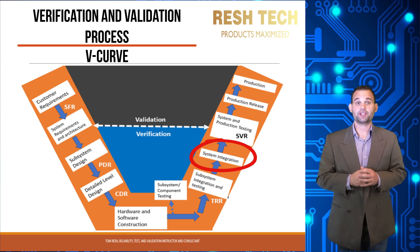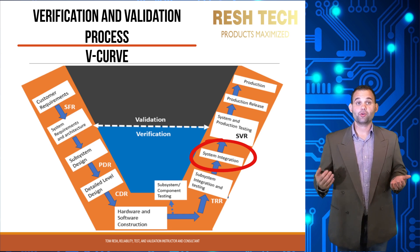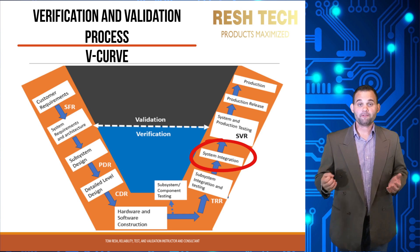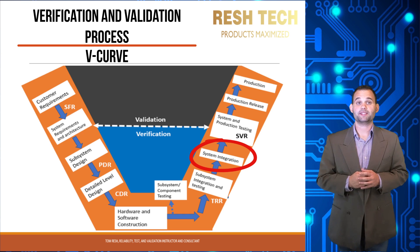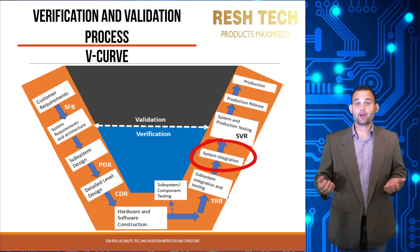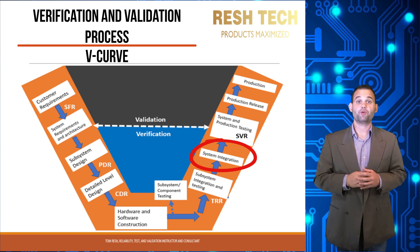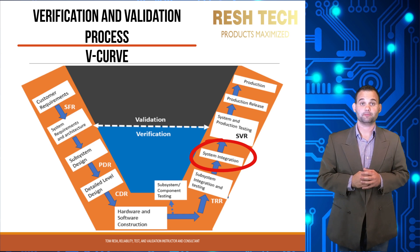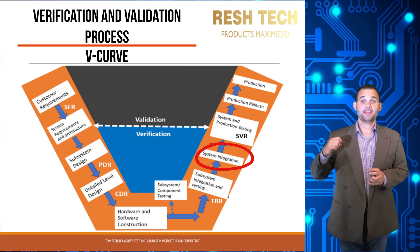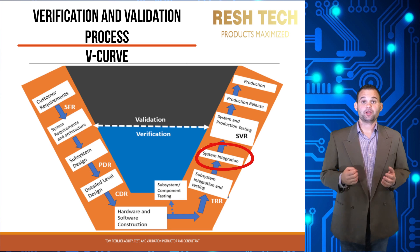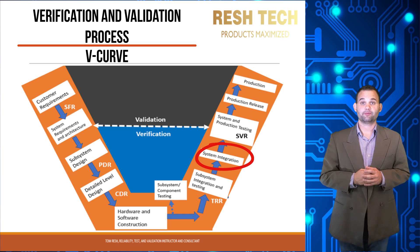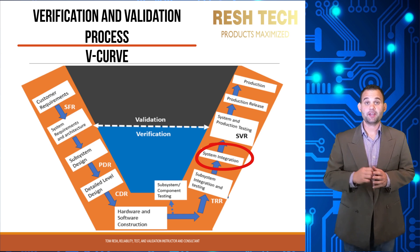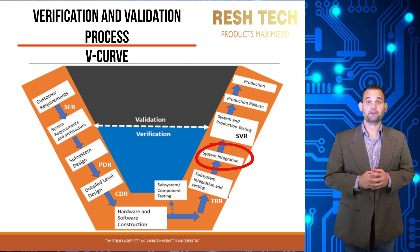Next is system integration and testing, where all subassemblies are brought together as a unified system. This verification step ensures that subassemblies operate together meeting the requirements and features defined in the system requirements and architecture. On the software side, all software modules are integrated and tested against software and system requirements using predetermined system-level test cases. However, completing this step does not mean you are done — functionality and feature verification under optimal conditions is only part of the design equation.